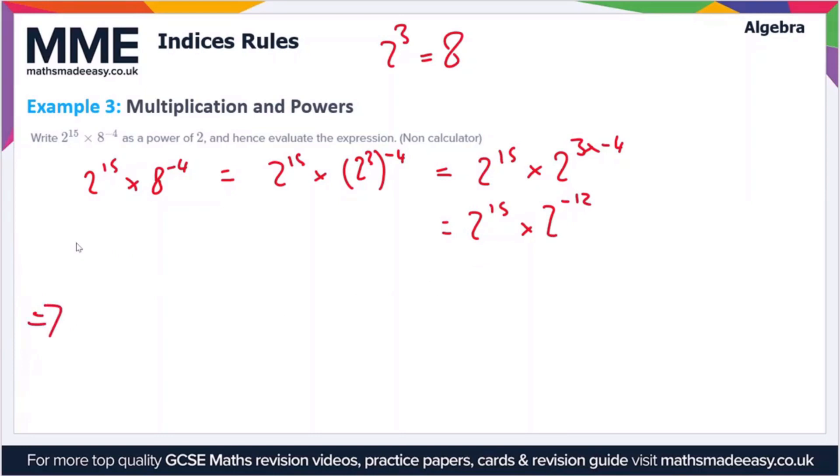Now I'm going to do my workings down here where there's a bit more room. So 2 to the 15 times 2 to the minus 12, I'm going to need another rule here. So if we have negative power, we can rewrite the expression as 1 over 2 to the positive 12.